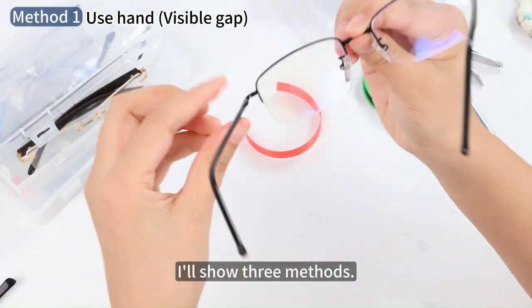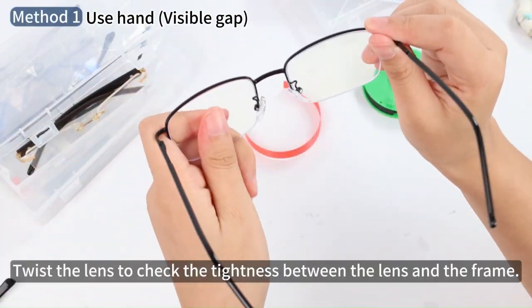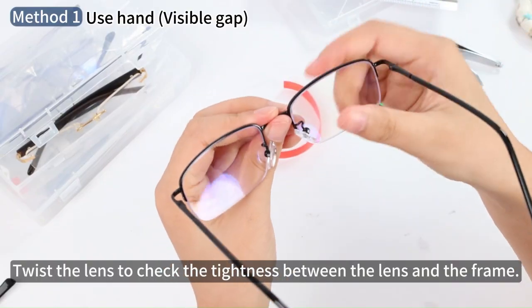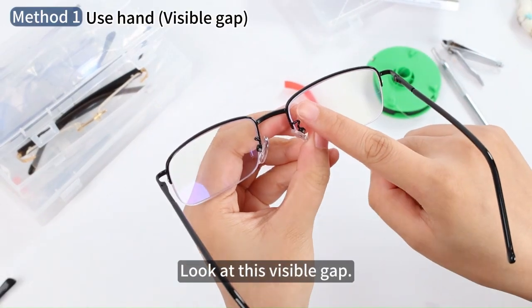I'll show three methods. Twist the lens to check the tightness between the lens and the frame. Look at this visible gap.